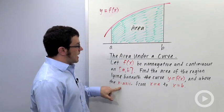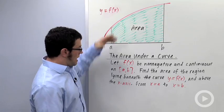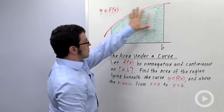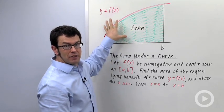And above the x-axis, from x = a to x = b, so between these two vertical lines. We're looking for the exact area of this region.